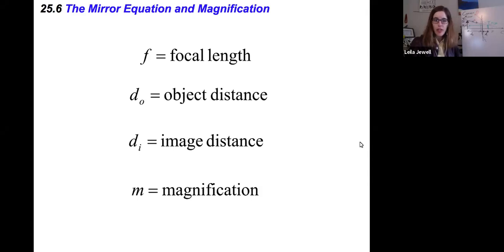For the mirror equation and magnification, we have a few variables to define before we get started. I've been using some of these already. Little f is our focal length, from the mirror itself to the focal point f. That is our focal length.